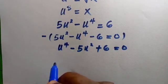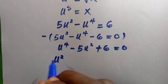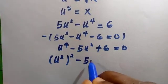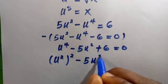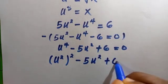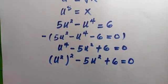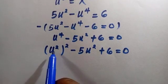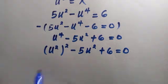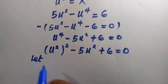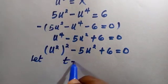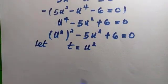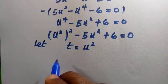We can rewrite u to the power four as (u²)², giving us (u²)² minus five u² plus six equals zero. For the second substitution, let t equal u², and we perform the replacement.